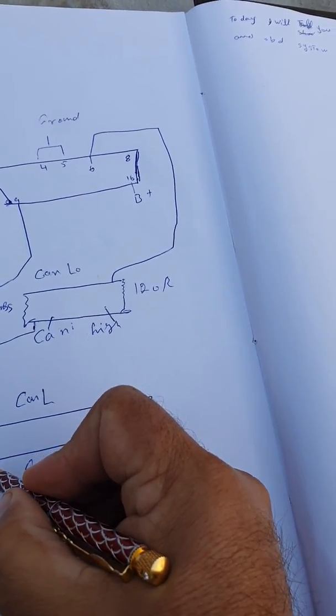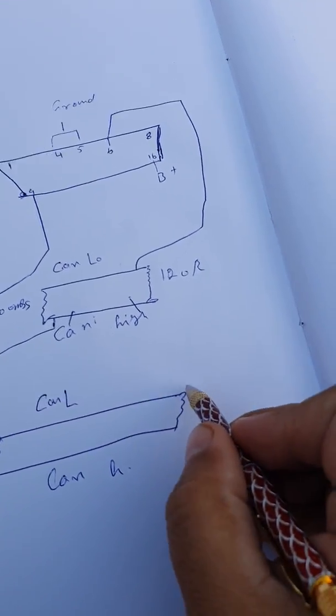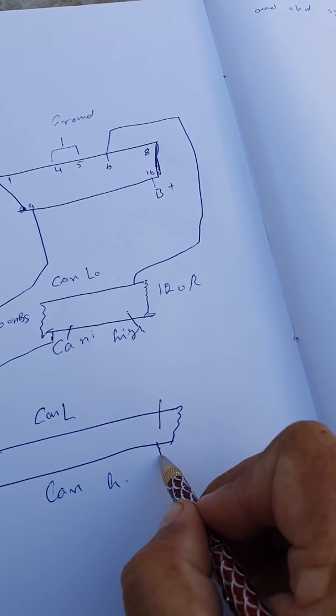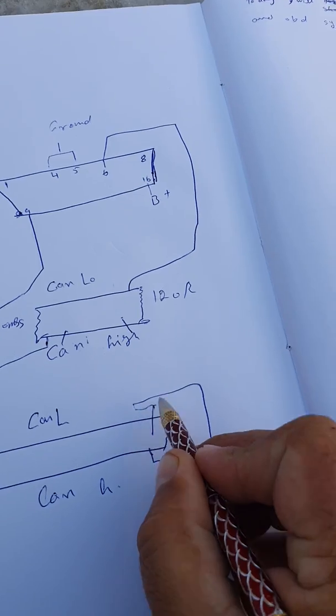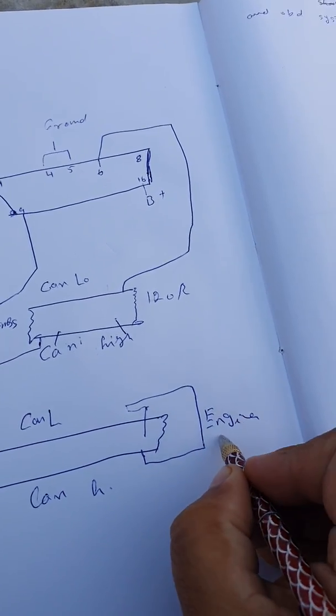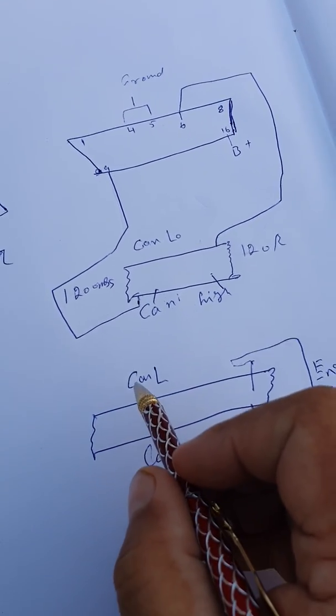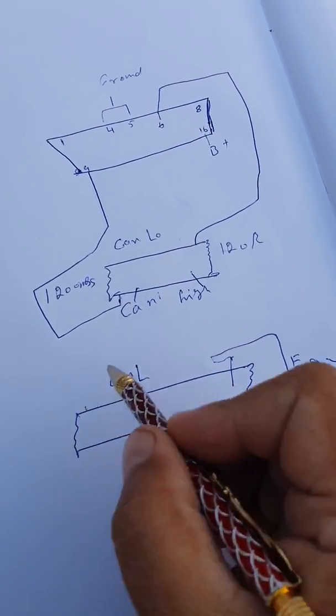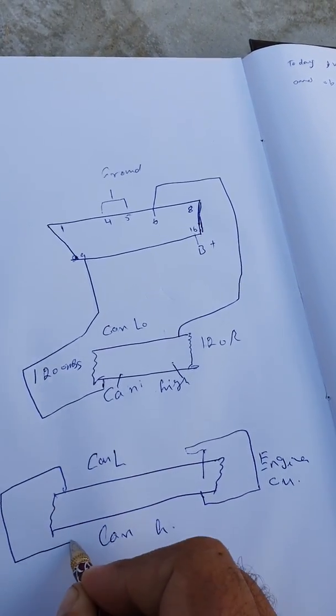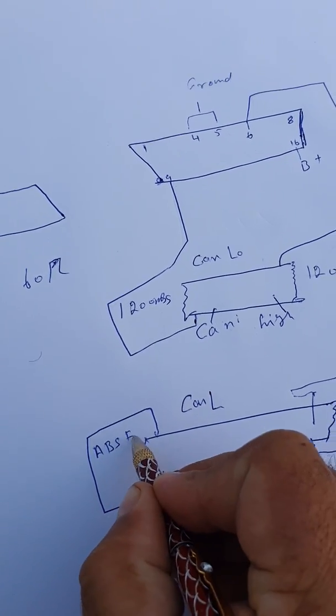This resistance is fixed inside the engine ECU. This is the engine ECU. Another resistor is fixed in some cars in the cluster, some cars in the ABS computer. For example, this is the ABS ECU.